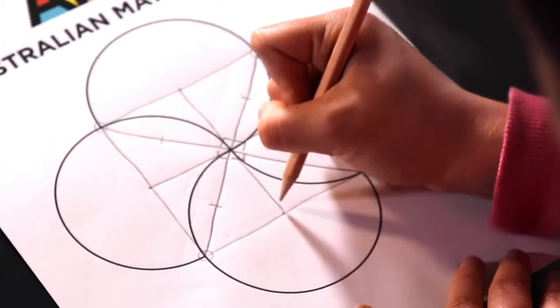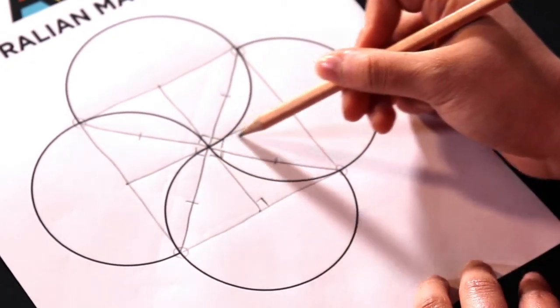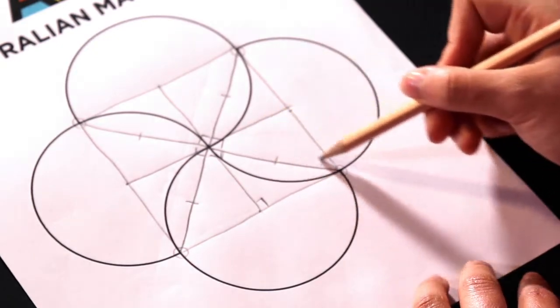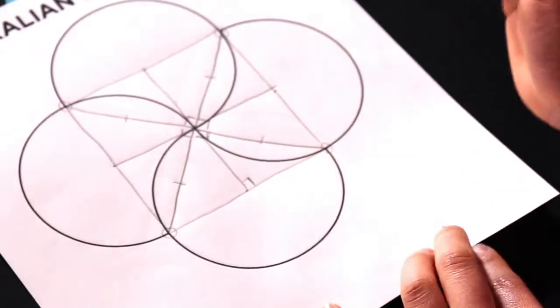So this angle here is also 90 degrees, and therefore this arc here is a quarter of the circumference, and so these arcs here are also three quarters.